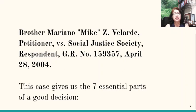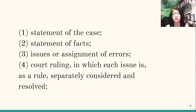There is a case decided in 2004 — Brother Mariano Mike Velarde versus Social Justice Society — which gives us the seven essential parts of a good decision. Number one, there must be a statement of the case, which is really a statement of the proceedings. Number two, there must be a statement of the facts — these are the facts on which the decision is based, not the proceedings, but the facts that happened before the case was filed. The statement of the case covers the proceedings that took place since the filing of the case up to the rendition of the decision.